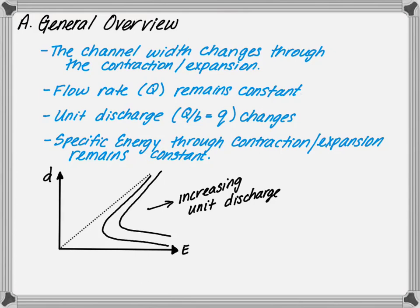The following schematic shows a specific energy diagram. As the unit discharge increases, you will have a new specific energy line for a specific unit discharge. If the energy is to remain constant, as stated above, then the unit discharge must change, resulting in a change in flow depth — for example, from depth dy to dx, or from dx to dy, depending on whether we are dealing with an expansion or a contraction.